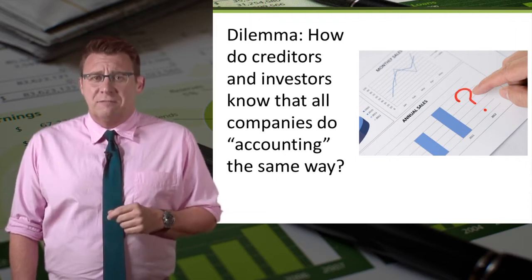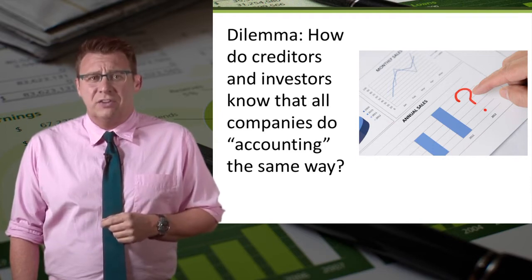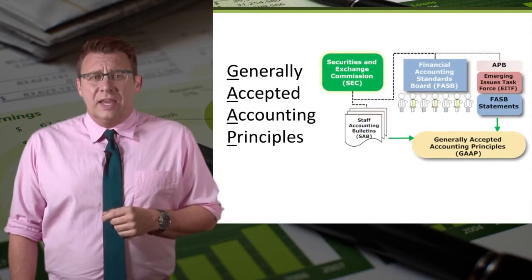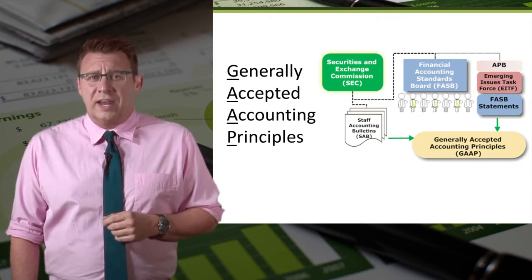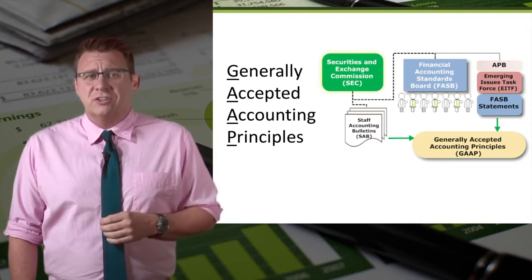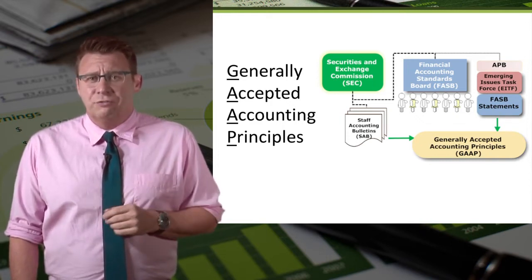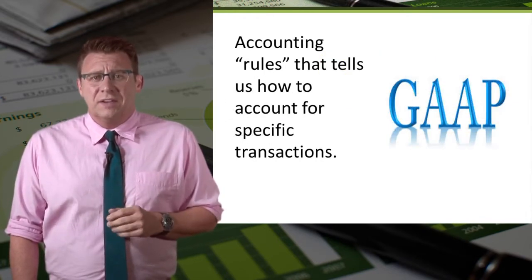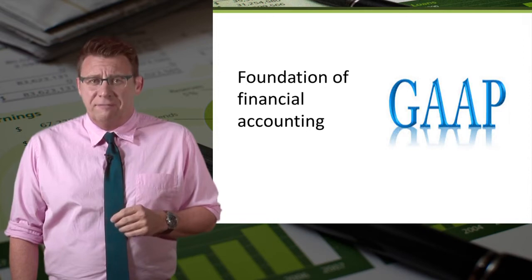But that creates a dilemma for investors and creditors. How do they know that the accounting from one company to the next is done correctly and with the same procedures and guidelines? The accounting profession has a list of accounting standards that must be followed to ensure that all similar transactions are accounted for the same way. These standards are known as Generally Accepted Accounting Principles, and will heretofore be known as GAAP. So GAAP are the accounting rules that tell us how to account for specific transactions. GAAP is the foundation of financial accounting.